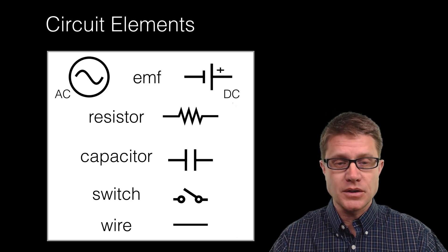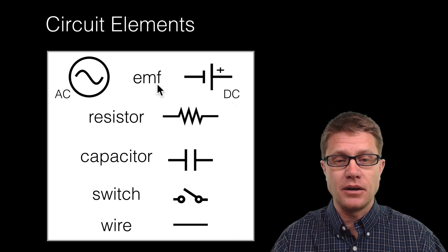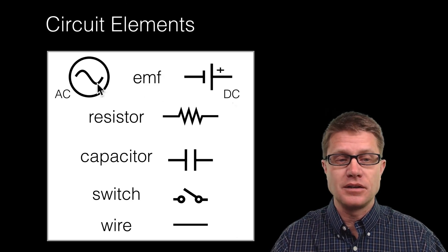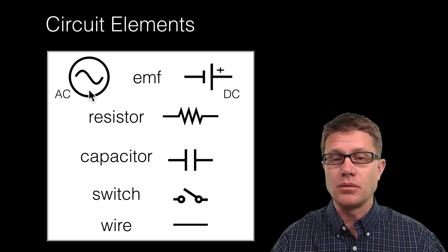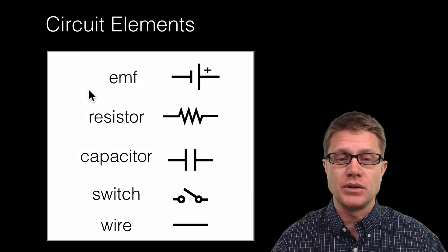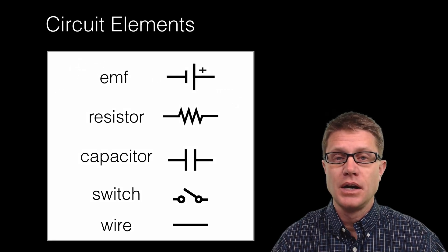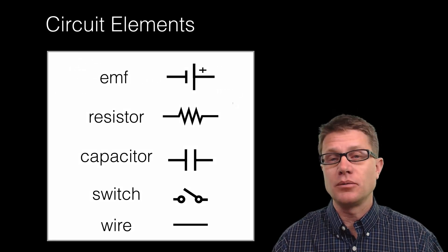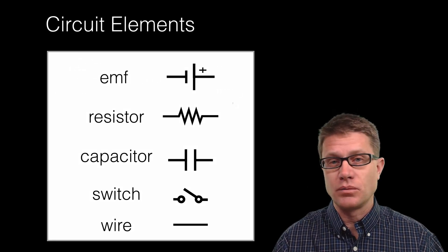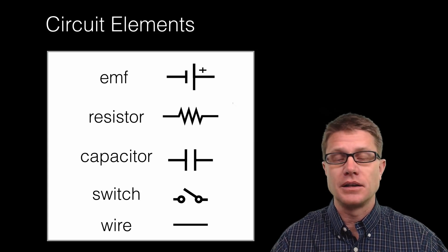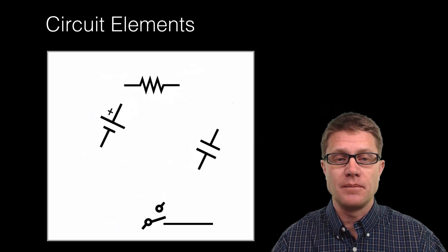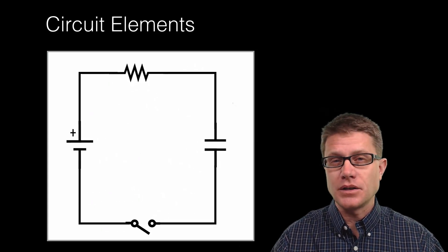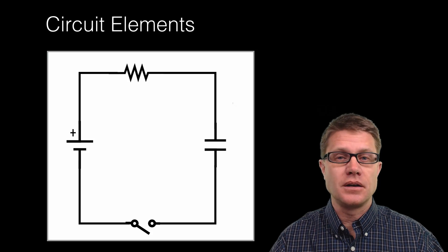We've got the electromotive force. The nice thing about AP Physics is you don't have to deal with AC power — we're just going to be dealing with DC power. But you should be able to recognize what a resistor looks like, a capacitor, a switch, and then finally a wire, which is just going to be a straight line.